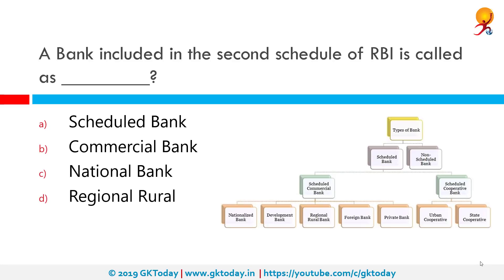A bank included in the second schedule of the RBI is called a scheduled bank. A scheduled bank in India refers to a bank listed in the second schedule of the Reserve Bank of India Act 1934. Banks not under this schedule are called non-scheduled banks. Scheduled banks are usually private, foreign, and nationalized banks operating in India.